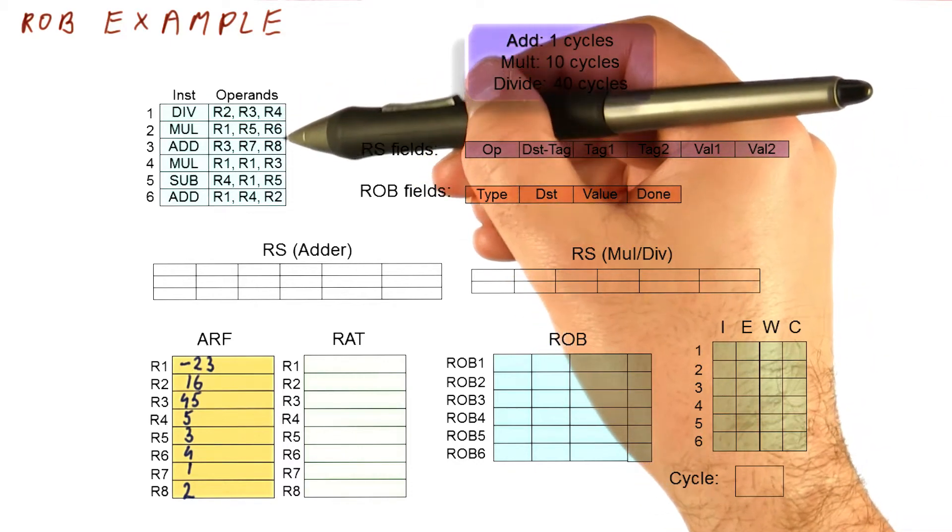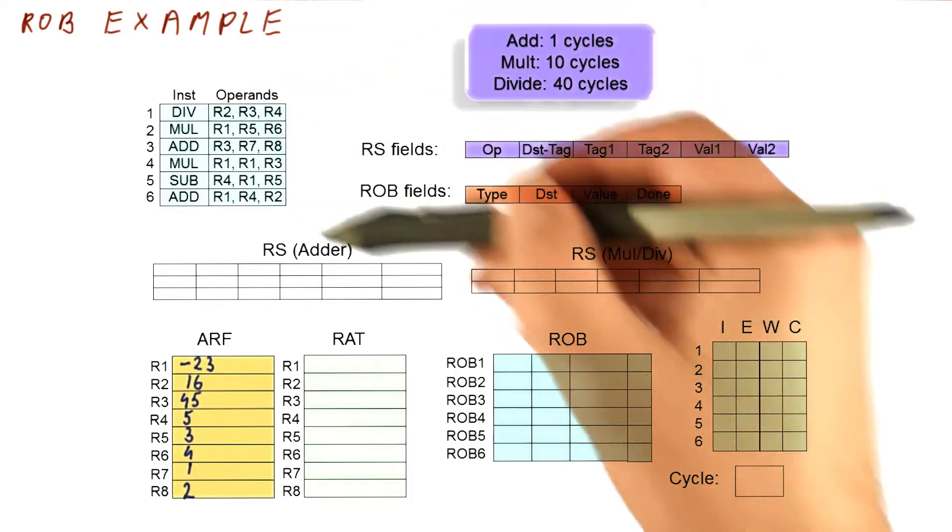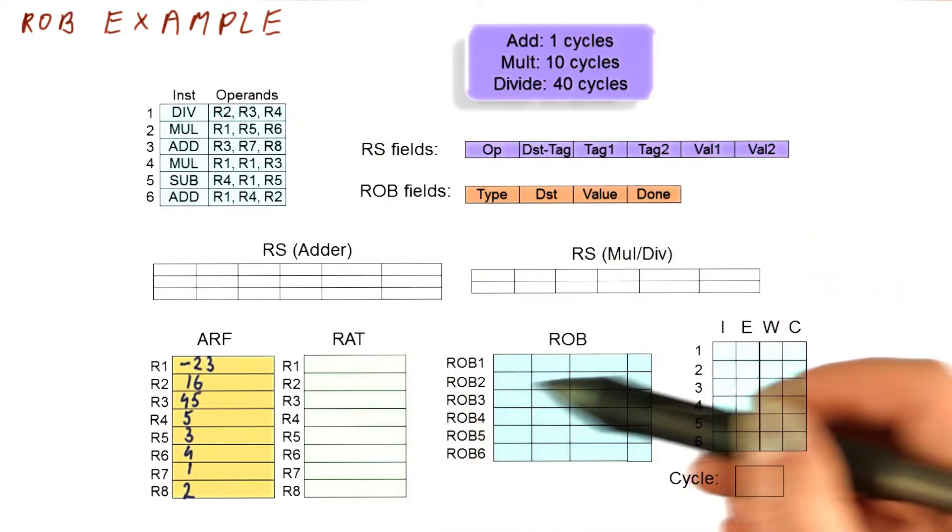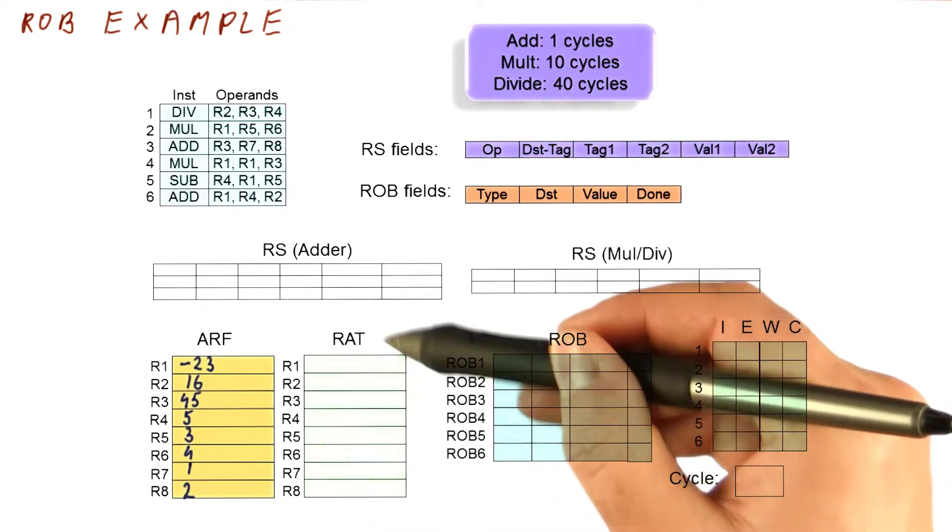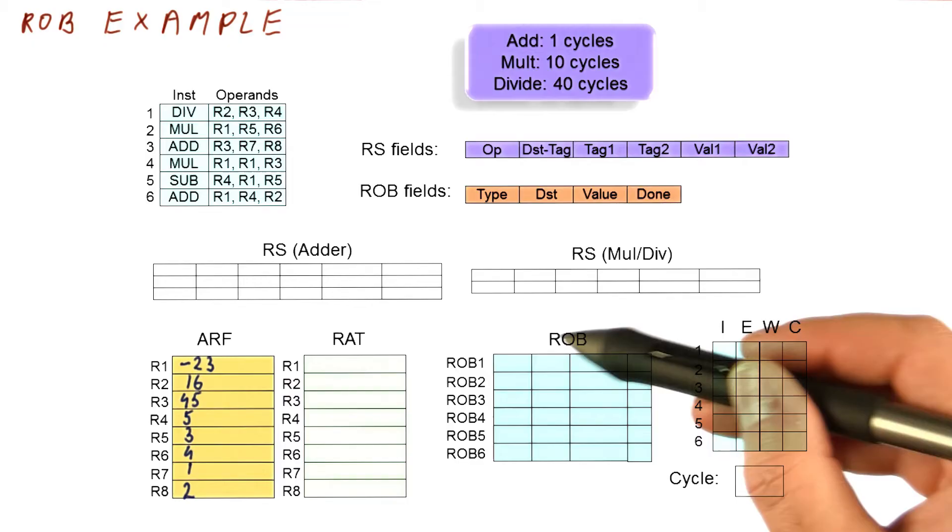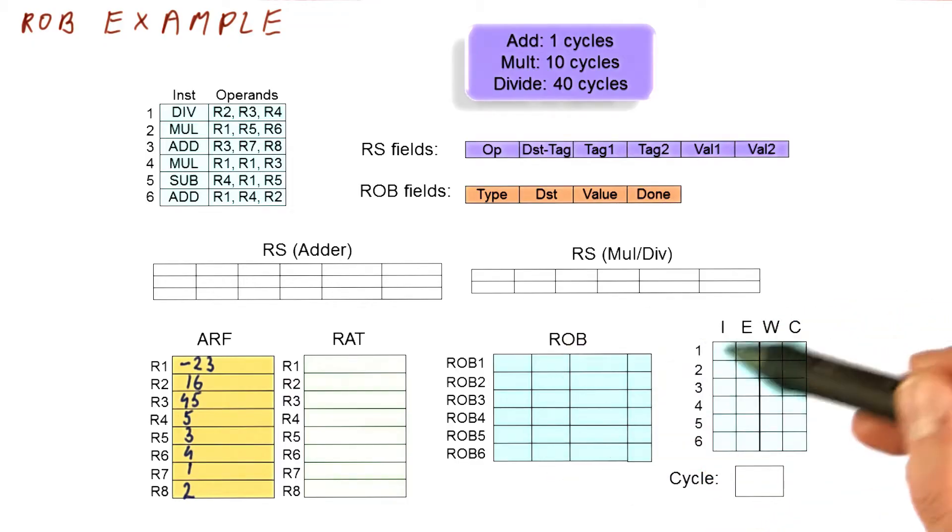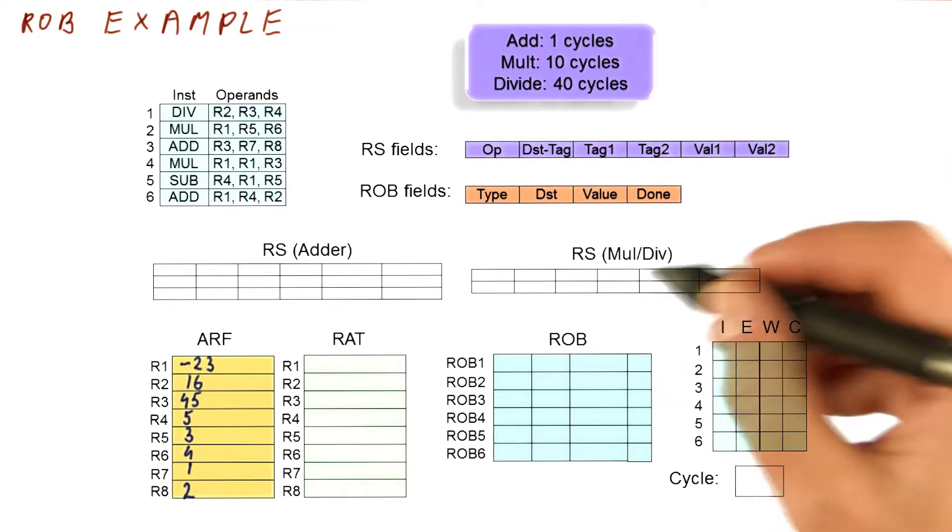So this is the state of the processor. We have some instructions fetched. This is the very first one that we will be trying to issue. This is our reservation stations, our register file with the values, the RAT that says where the values are currently and it's pointing to the register file for now. The ROB that is empty for now. This is a little table that we will be writing what happens in which cycle. And then this is kind of the legend for our reservation stations and ROBs because we need to know which field to put which value in.